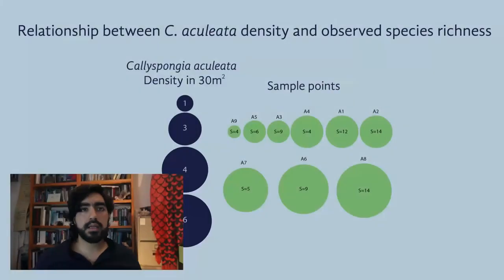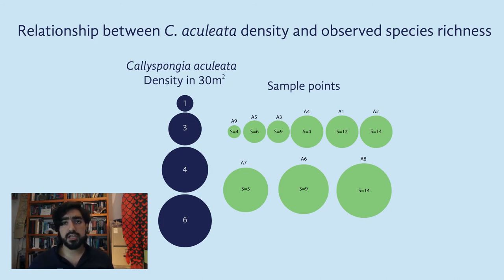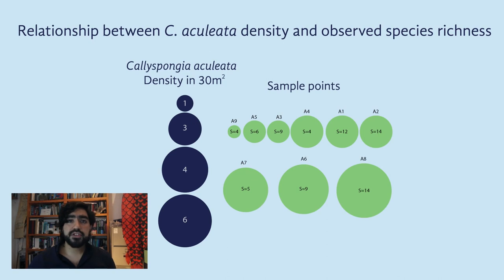We observed that sites with higher sponge density also presented greater diversity of sponge-dwelling fauna. In this graphic, each green circle represents a sample point and the size of the circle represents sponge density. Looking closely inside the circles, the annotated value is the species richness. This graph represents how sponge-dwelling fauna species richness augments with the augmentation of sponge density. In small circles we registered species richness between 4 to 6, and in the biggest circles we have an S value between 9 and 14.